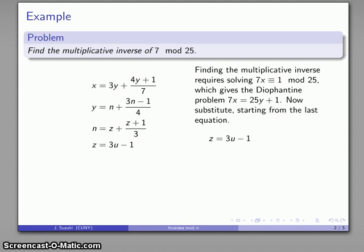So let's try it out. For example, let's say u is equal to 1. So that means that z is going to be 3 times 1 minus 1 is 2. Well, I know what z is, so now I can find n. And I'll substitute that in. n is equal to 3.